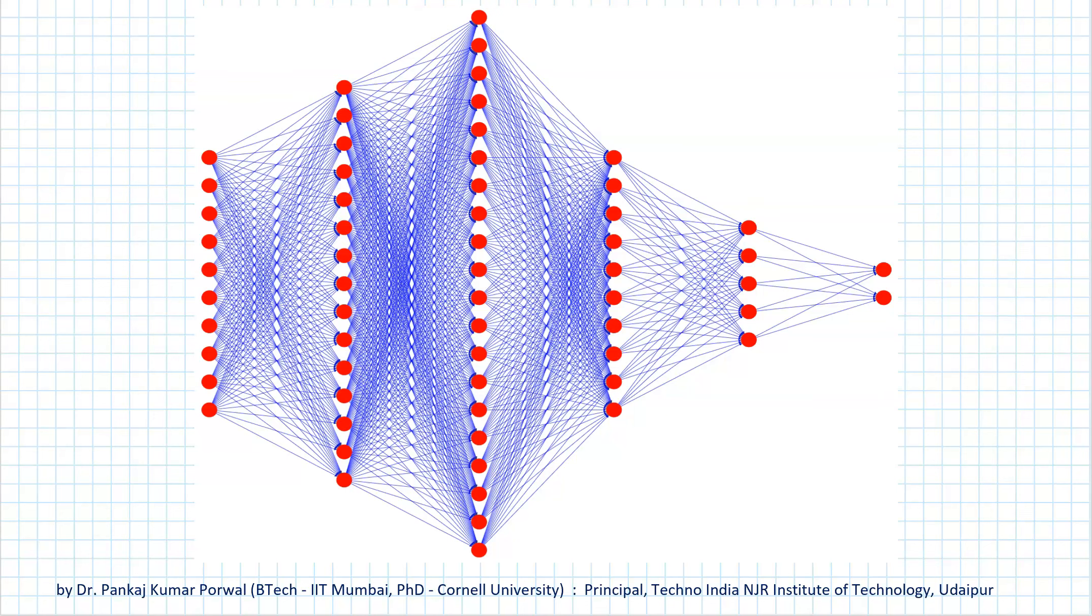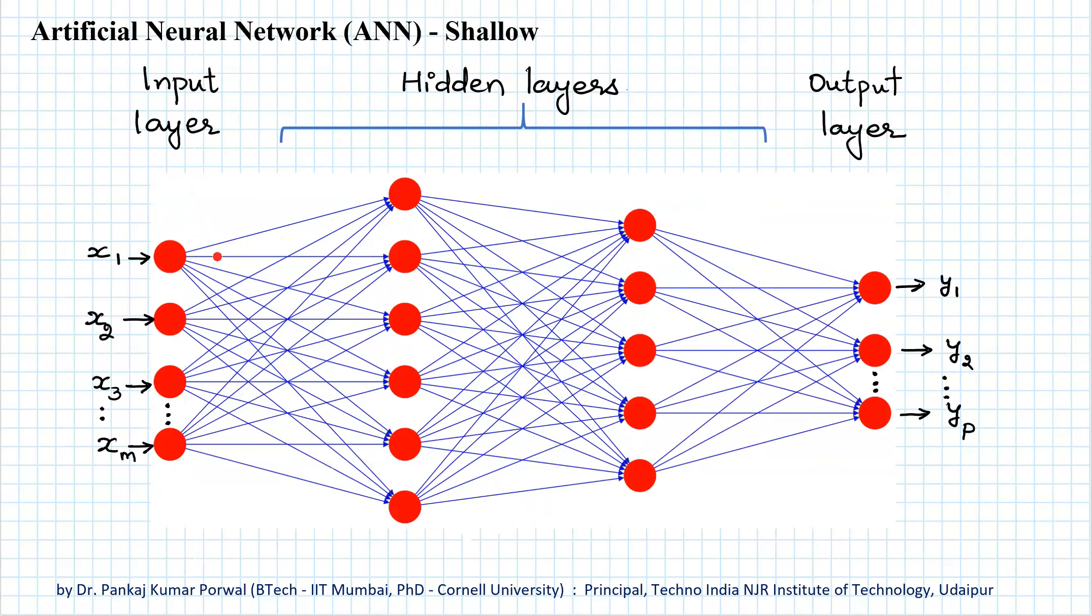Because of these reasons, artificial neural networks remained relatively small till the beginning of this century. These small artificial neural networks had limited representation capacity, meaning they could learn only simple relationships between small number of inputs and outputs.